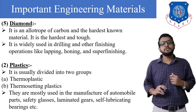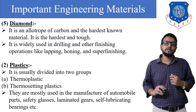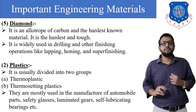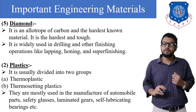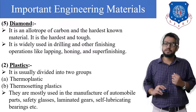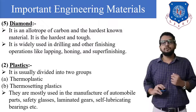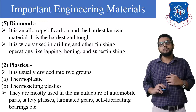The next type is plastics. Plastics are usually divided into two groups: first, thermoplastics, and second, thermosetting plastics. They are mostly used in the manufacture of automobile parts, safety glasses, laminated wheels, and self-lubricating bearings. With this we are completing our chapter.